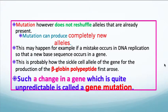Mutation does not reshuffle alleles that are already present. Mutation can produce completely new alleles. This may happen, for example, by mistake if DNA replication does not go correctly and there is a new base sequence that occurs in that gene. That's probably how the sickle cell allele of the gene for the production of B-globin polypeptide first arose. Such a change in a gene, which is quite unpredictable, is called a gene mutation.